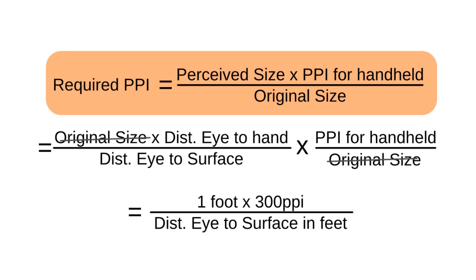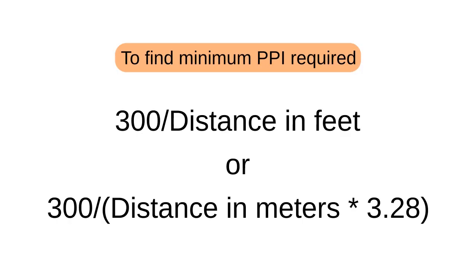PPI equals perceived size multiplied by 300 divided by original size. Now, this is 300 multiplied by distance to hand divided by distance to origin. How many DPI is 300 divided by distance to origin? In meters, that is 300 divided by distance to origin multiplied by 3.28, because 1 meter is equal to 3.28 feet.